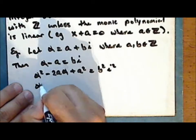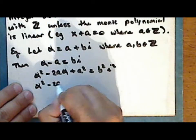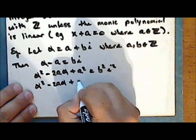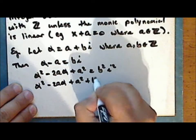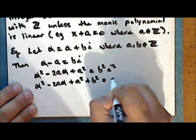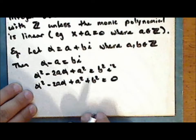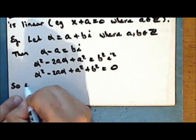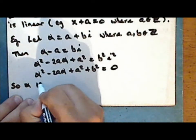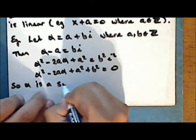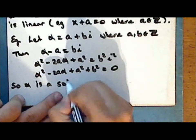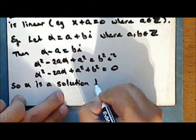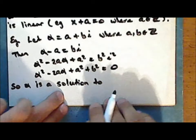Recall that the word monic means that the leading coefficient is the number one — that is, the multiple of the highest power of the indeterminate or variable x is the number one.